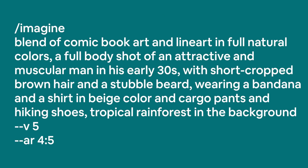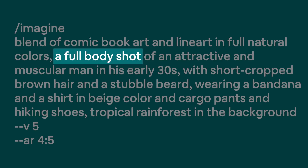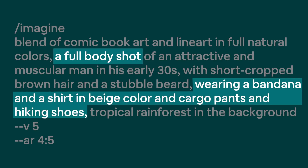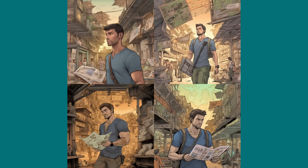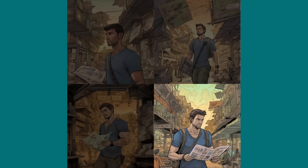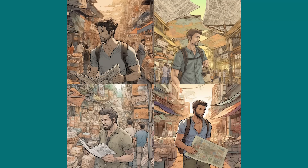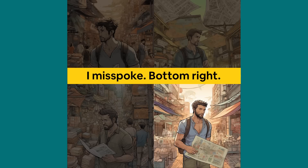Next, we need some target scenes into which we can swap Leo's face. This is more or less the same prompt, except I've changed the composition by adding a full body shot and added details regarding his clothing. From these four images I picked one that I liked the best. I then made some additional minor adjustments to the prompt just to change the scene, and from those four shots I picked the bottom right one as my second target image. I then re-rolled the very same prompt one more time to get another variation, and from those four shots I went with the top left one.